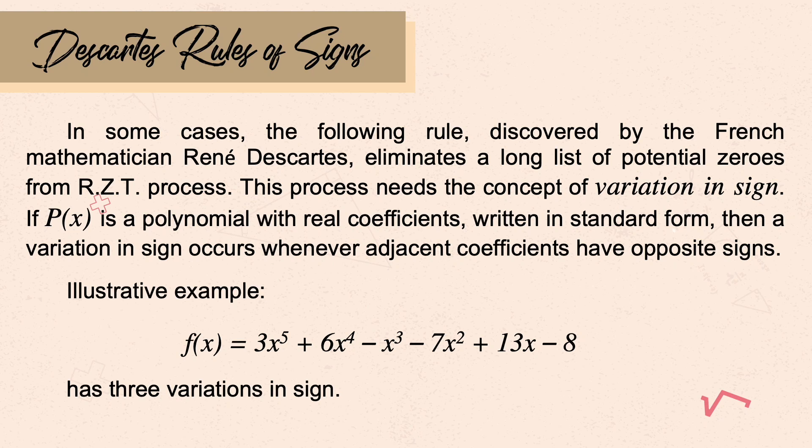The last unit we will discuss is about finding the signs of roots of functions. It pertains to Descartes' rule of signs. The following rule, discovered by the French mathematician René Descartes, eliminates a long list of potential zeros from the rational zeros theorem process. This process needs the concept of variation in sign.